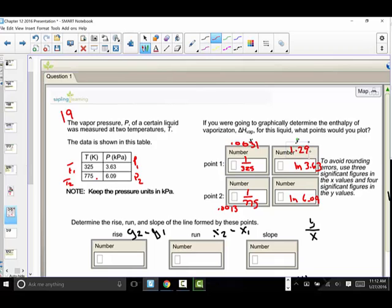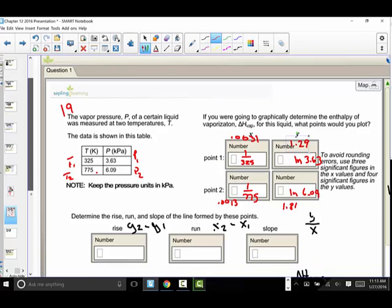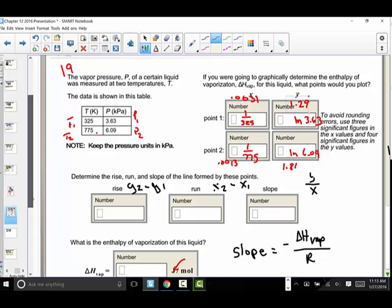And I'll do the same, natural log of 6.09. How about 1.806, so 1.81. Alrighty. So we've managed to find the two points on the line.